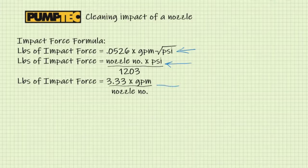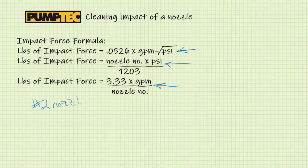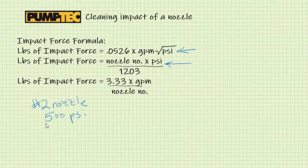This one if you know the GPM. Many times the nozzle number, let's say number two nozzle, and the pressure, let's say 500 psi, are known. So you'd use the middle formula there.